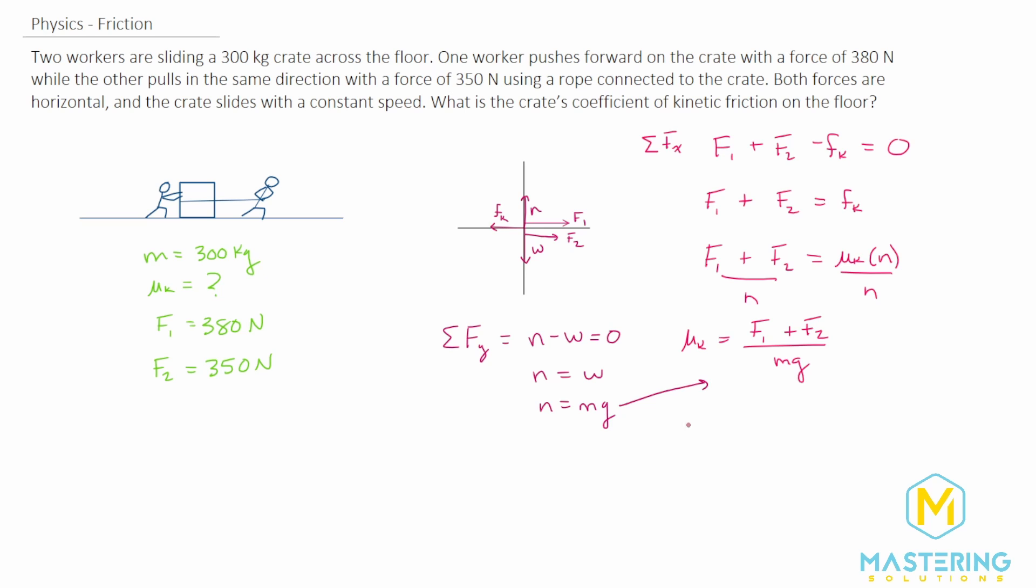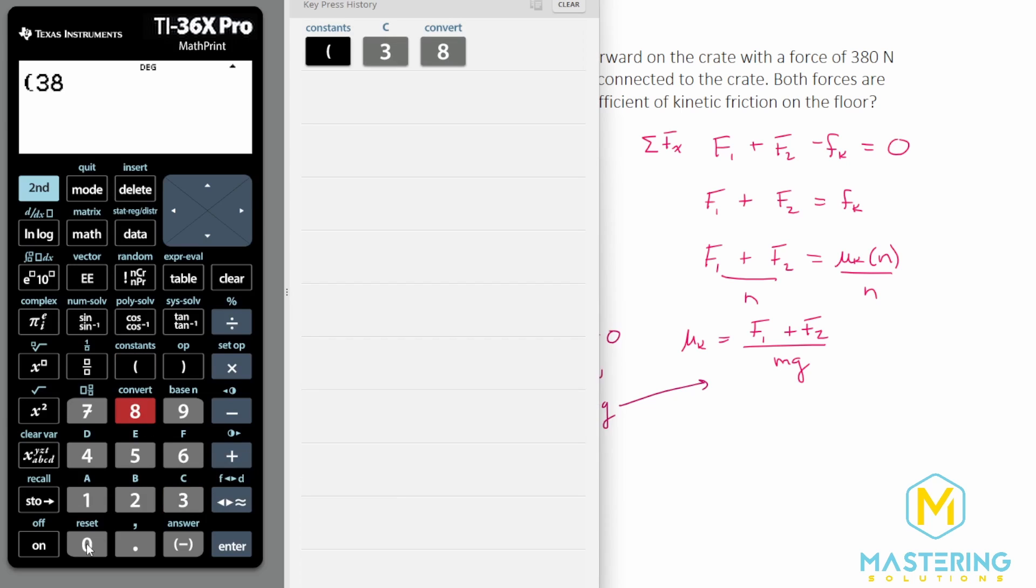Now we have our formula. Mu sub k equals F1 which is 380 newtons plus F2 which is 350 newtons, all divided by the weight which is 300 kilograms times gravity, 9.8 meters per second squared.